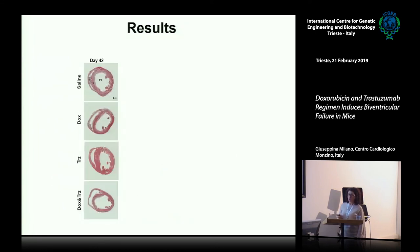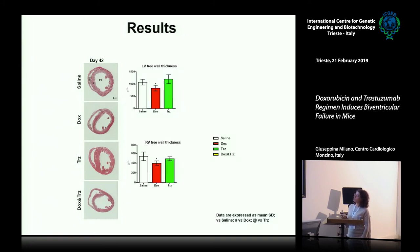Histological analysis also confirmed the echocardiography and hemodynamic results. Performed at the end of the experiment, we observed a decrease in both left and right free wall thickness for the Doxorubicine-Trastuzumab treatment, and this decrease was more pronounced in the combination group.